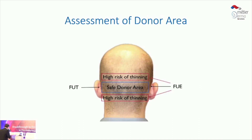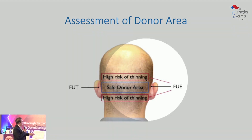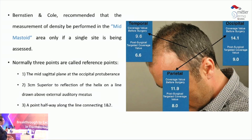When considering risk in these procedures, you need to understand that the safe donor area is in the middle, and the upper and lower zones are high-risk areas. You want to make sure you don't harvest from those regions.